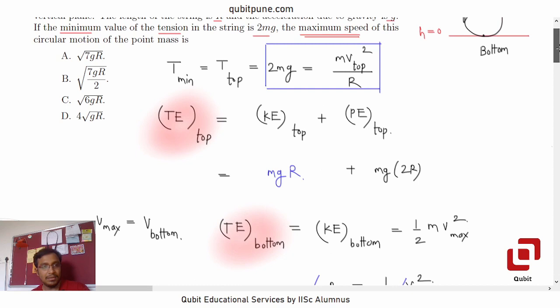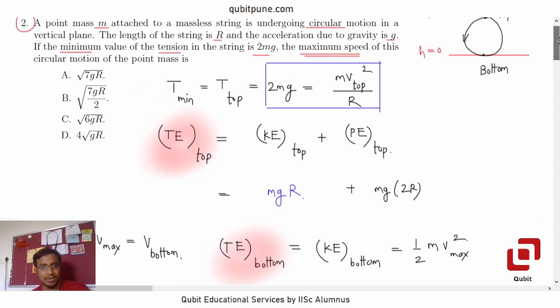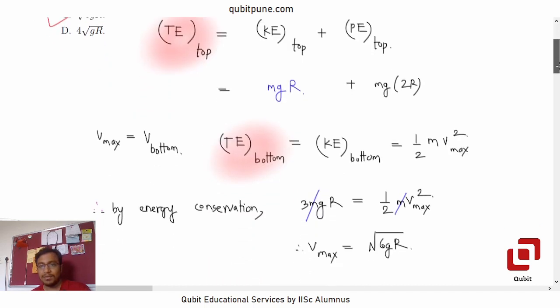Is that there in the options? Yes, that is there in options, and the correct option is C, root of 6gR.